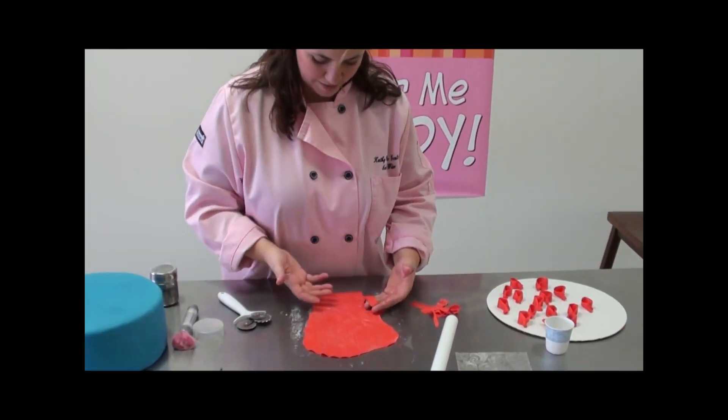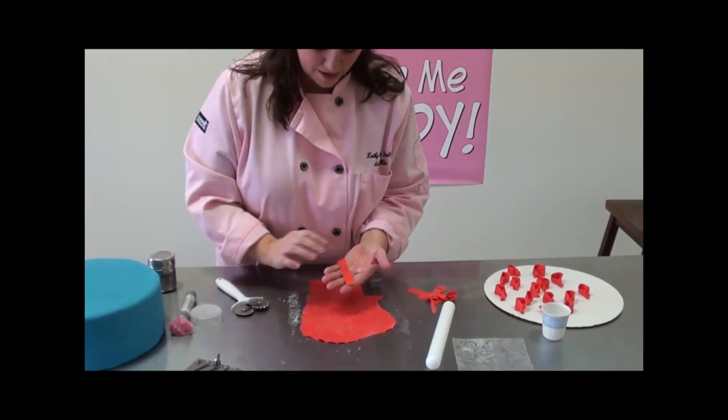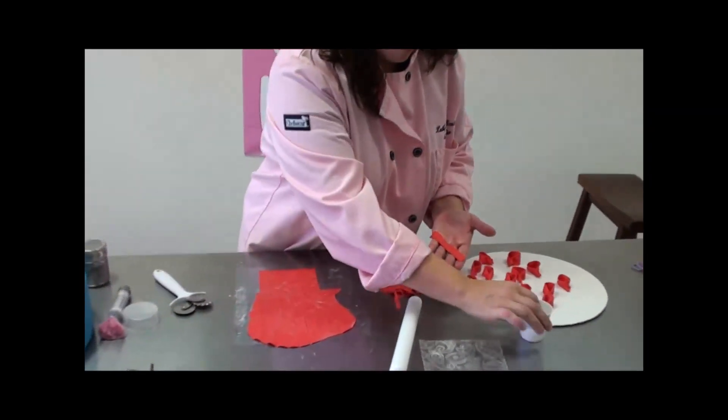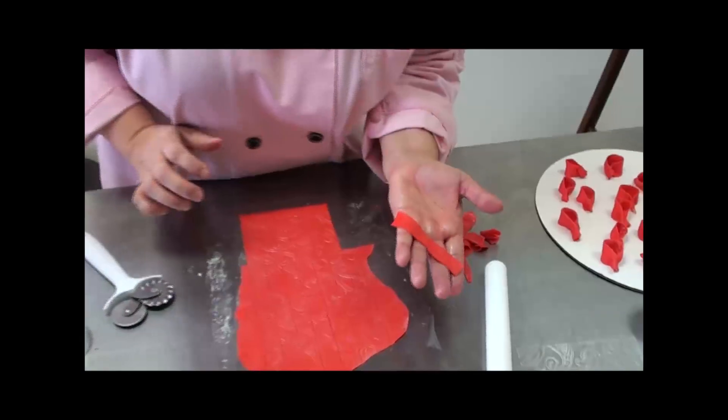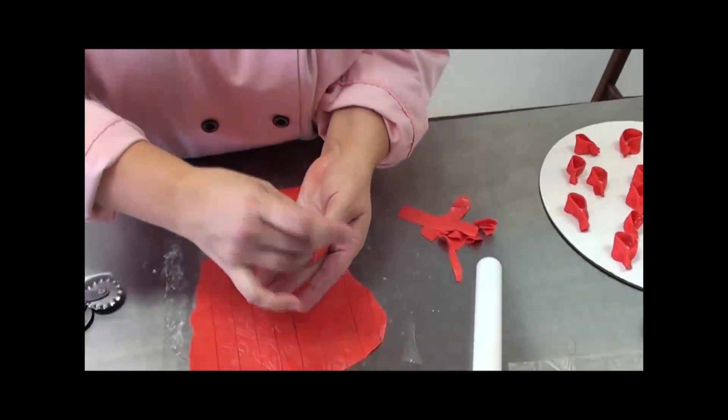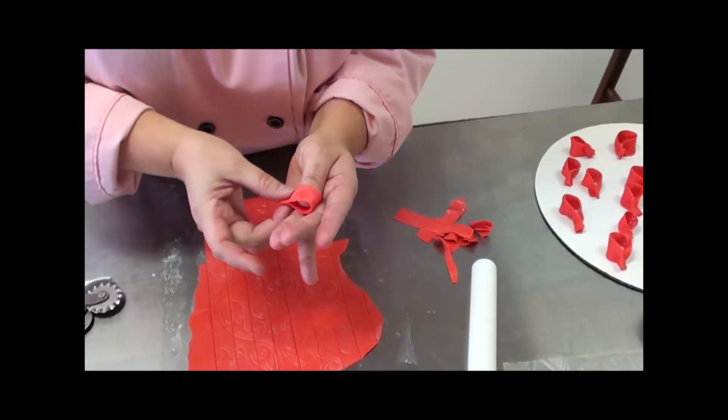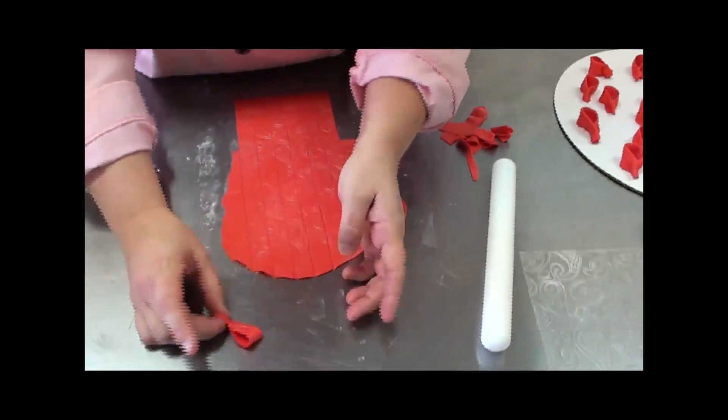We've got our nice embossed, pearlized pattern. I'm going to turn this upside down on my hand. A little drop of water on my fingertip goes right there, and I'm going to roll it over on my thumb, and then set it on its side to dry.